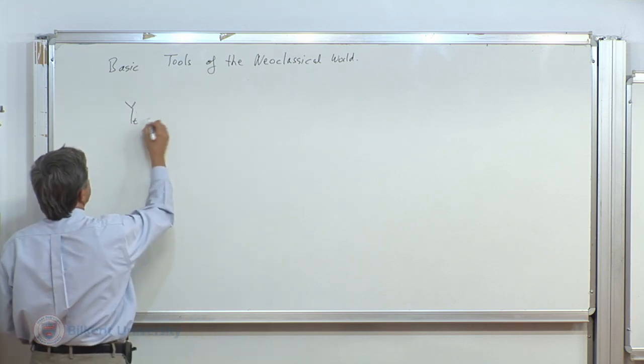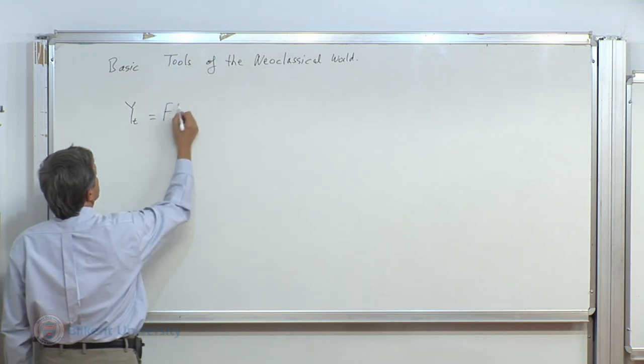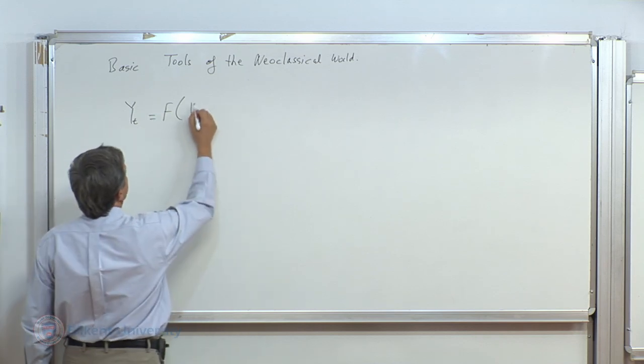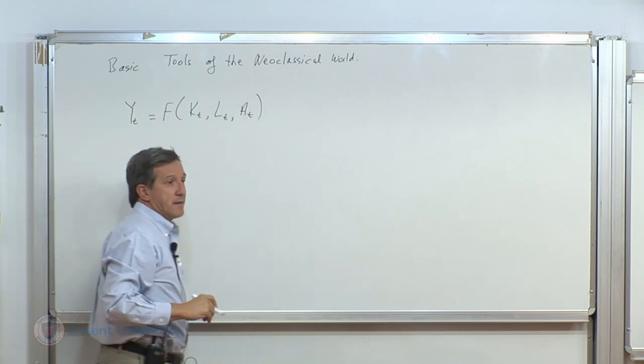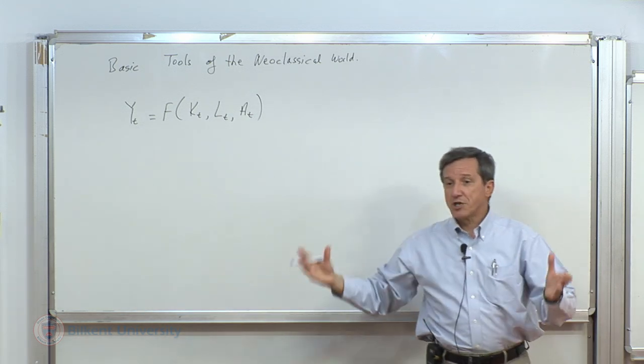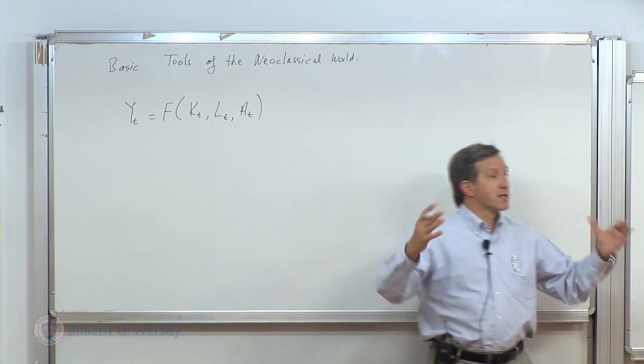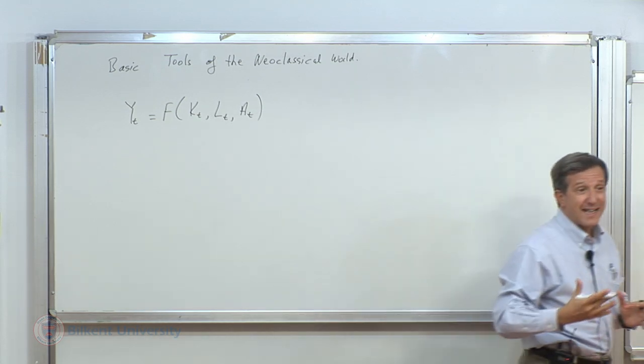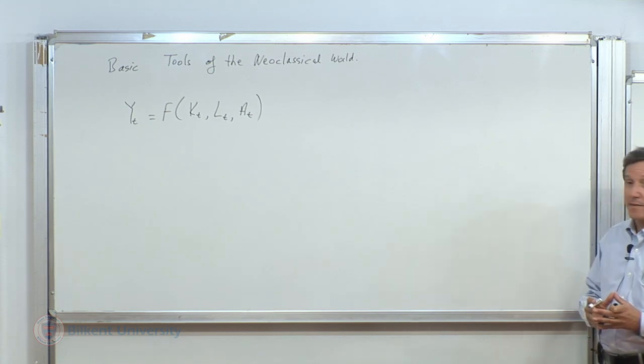And we say that, denoted by Y_t, national income, in sum, is produced along a neoclassical production function, F, of capital stock, labor stock, and some index that shows the technology, institutions, governorship, social capital, what have you. Everything that makes capital and labor work. The institutional and technological index, the advance that this economy has.